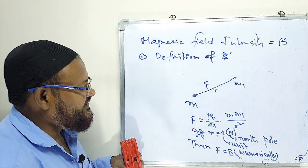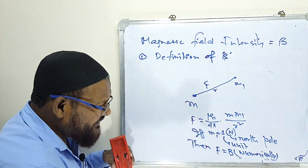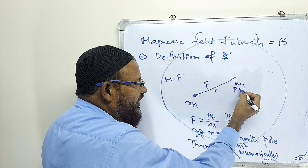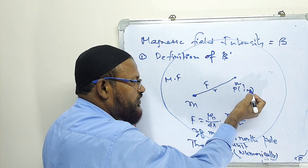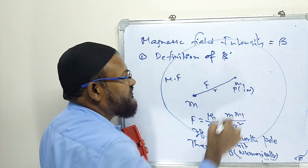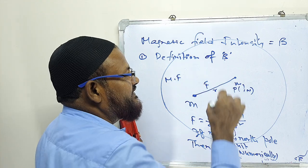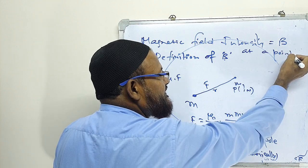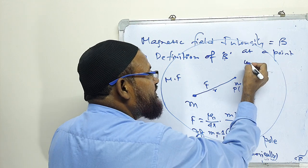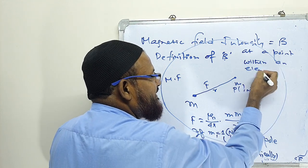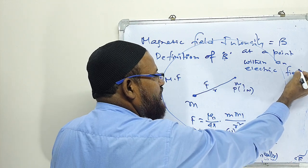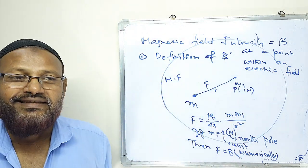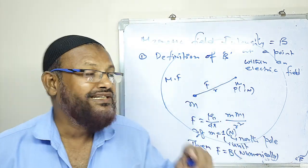The definition: magnetic field intensity at a point within a magnetic field is numerically equal to the Coulombic force experienced by a unit north pole placed at that point.